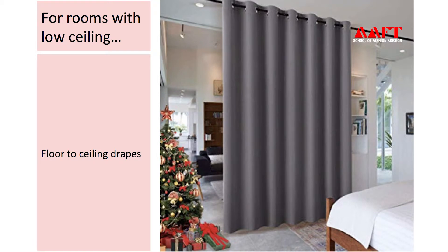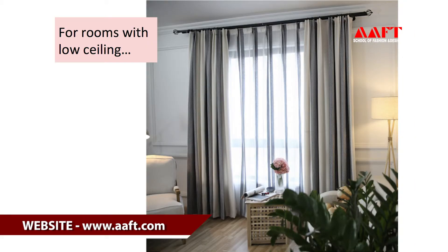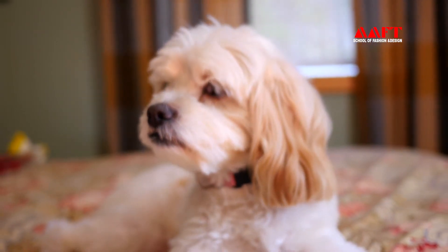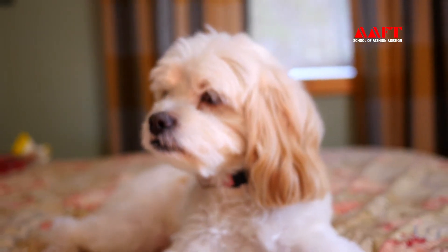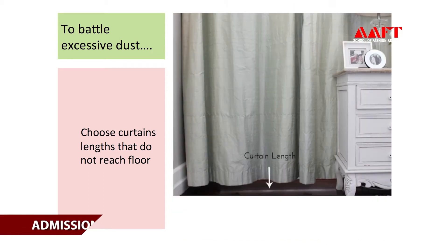Point number three is length. Length of a curtain is another important factor while selecting curtains. For rooms with low ceilings, we consider floor-to-ceiling drapes, which will create the illusion of more space. We tend to choose shorter lengths if you have children or pets at home, to prevent curtains from getting damaged. If you battle excessive dust in a particular room, you should go for curtains that do not reach the floor, otherwise they will get dirty very quickly.